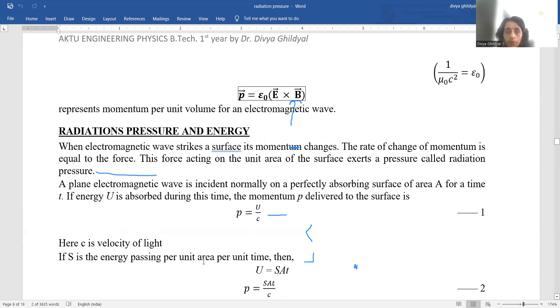Radiation pressure. When an electromagnetic wave strikes a surface its momentum is going to change. From the law of conservation of momentum before and after it remains same. From Newton's law we know that rate of change of momentum is equal to force f is equal to minus dp by dt. This force acting on unit area will exert a pressure.